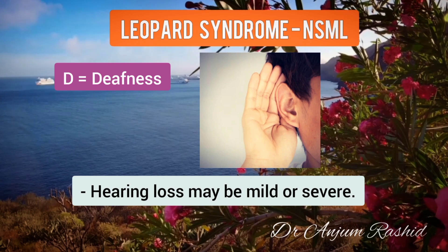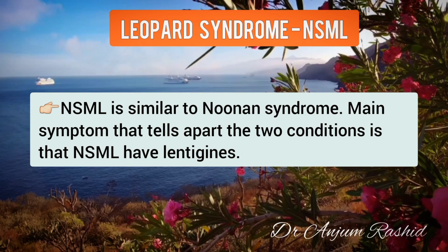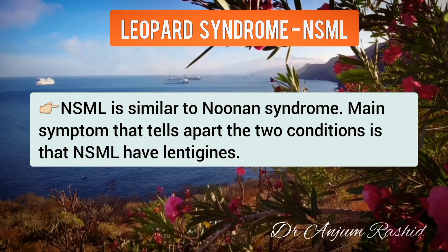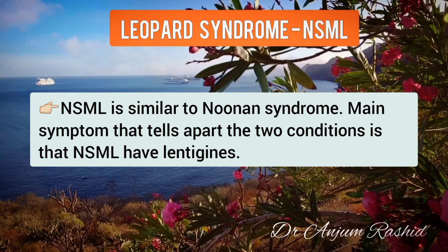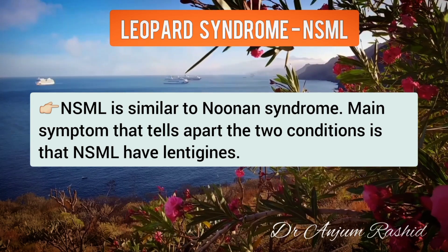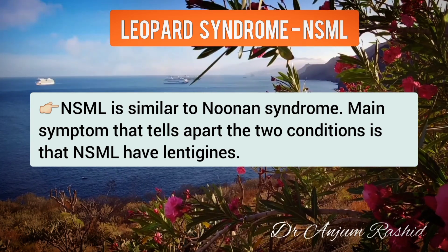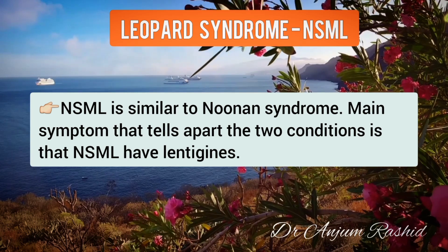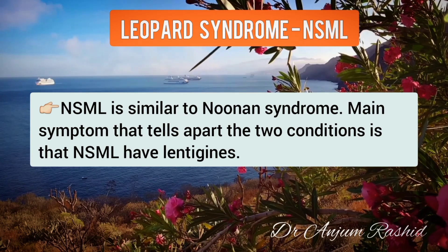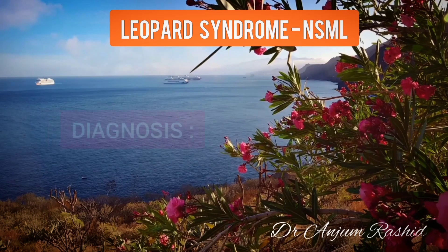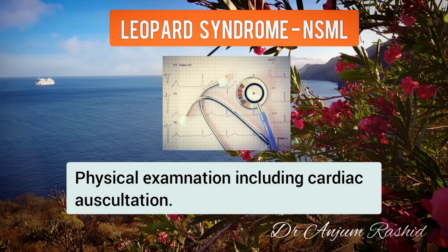The last letter, D, stands for Deafness. Hearing loss may vary between mild and severe. LEOPARD syndrome is similar to Noonan syndrome; however, the main symptom that distinguishes the two conditions is that people with LEOPARD syndrome have lentigines — skin manifestations.